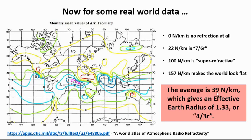Now that we've got our formula, we can plug in the global average delta N and work out an effective Earth radius. That comes out to be 1.33, or 4 over 3R. That's basically why I think 7 over 6R is an underestimate and 4 over 3R is a better estimate.